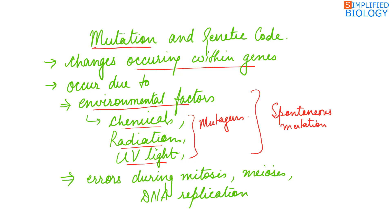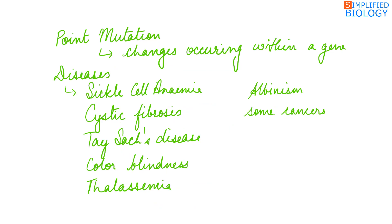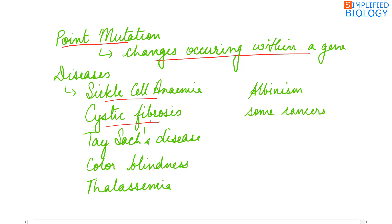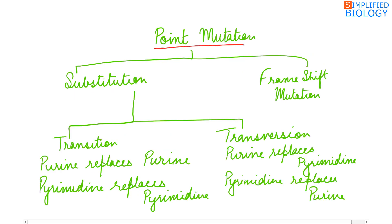Mutation also occurs due to errors during mitosis, meiosis, and DNA replication. Point mutations are changes occurring within a gene. Diseases occurring due to point mutation include sickle cell anemia, cystic fibrosis, Tay-Sachs disease, colorblindness, thalassemia, albinism, and some cancers. Point mutation occurs due to substitution mutation or frameshift mutation.